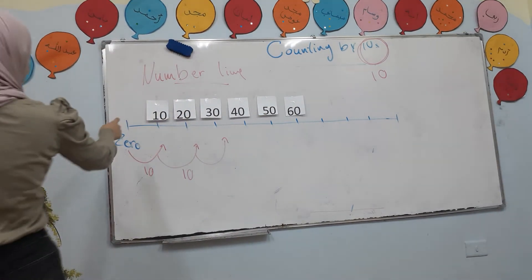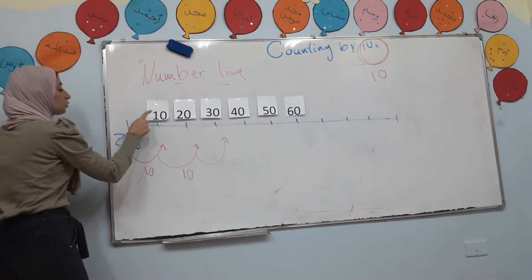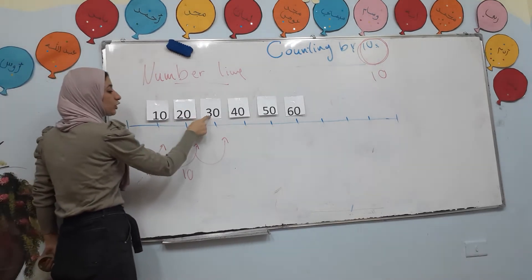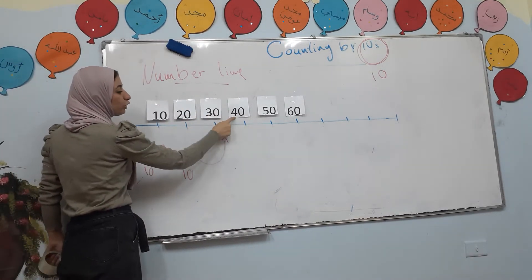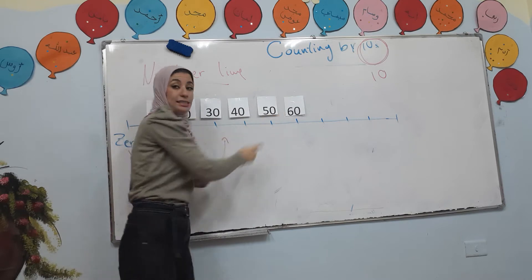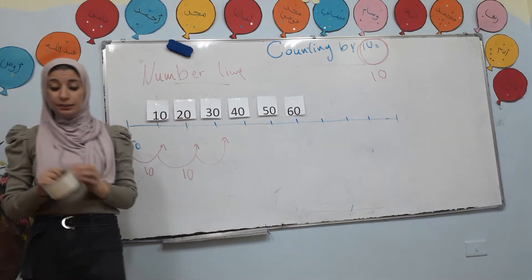If I add ten more each time: 10, 20, 30, 40, 50, 60. Right?